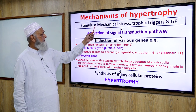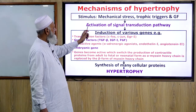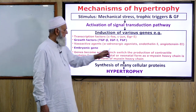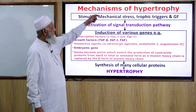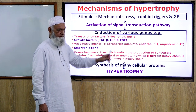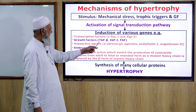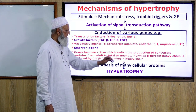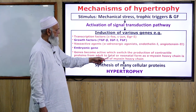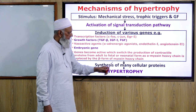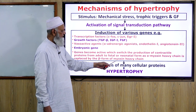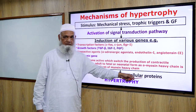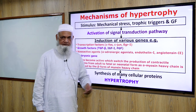The mechanism of hypertrophy involves stimuli such as mechanical stress, tropic triggers, and growth factors, which activate signal transduction pathways and then induce various genes. Transcription factors, growth factors, vasoactive agents, and embryonic genes are involved. Genes become active which switch the production of contractile proteins from adult to fetal or neonatal form — for example, alpha myosin heavy chain is replaced by the beta form of myosin heavy chain.